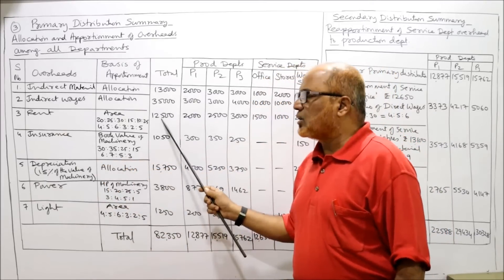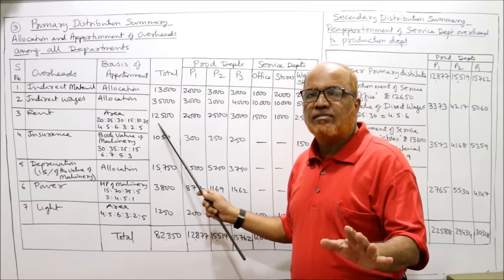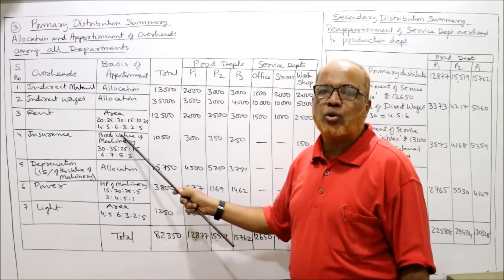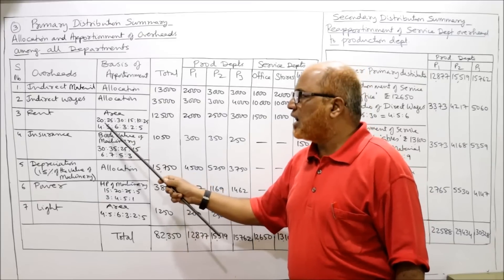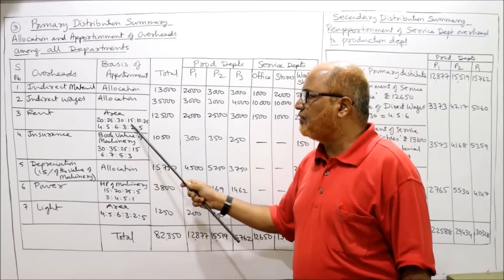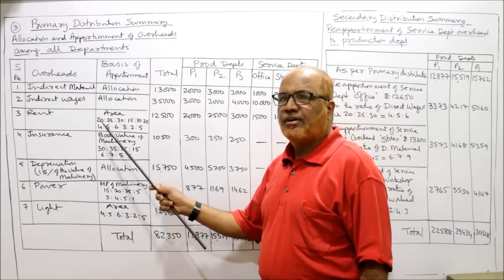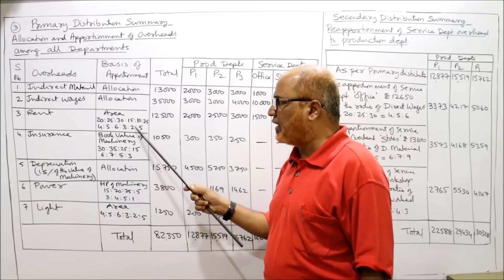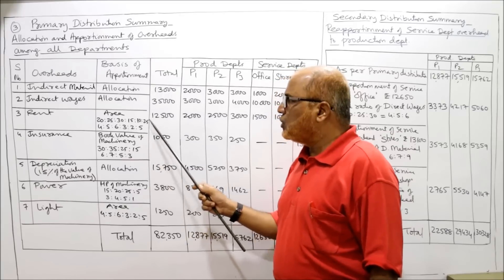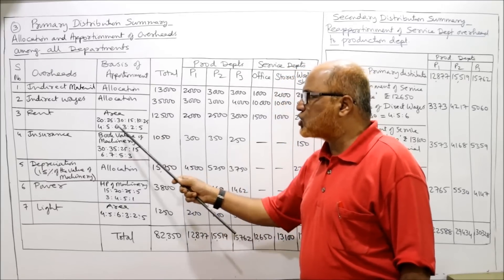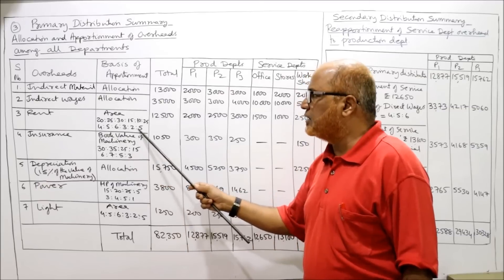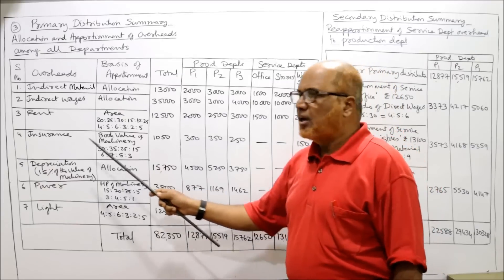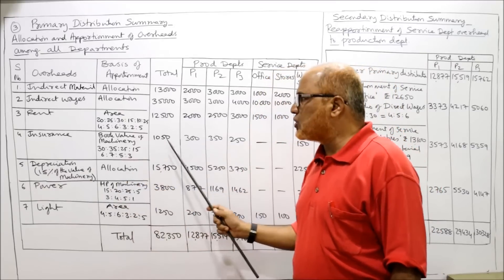Rent 12,500 is apportioned on the basis of area. The area ratio is 20:25:30:15:10:5 — all divisible by 5 — giving the simplified ratio 4:5:6:3:2:1. Apportioning 12,500 in this ratio gives: P1 = 2,000, P2 = 2,500, P3 = 3,000, Office = 1,500, Stores = 1,000, Workshop = 2,500.